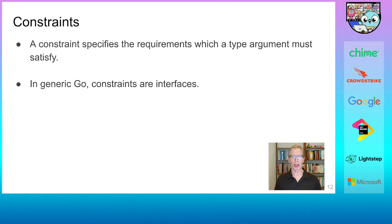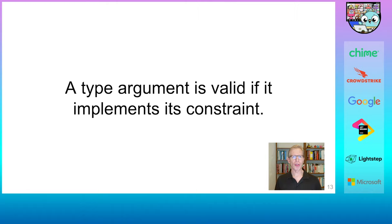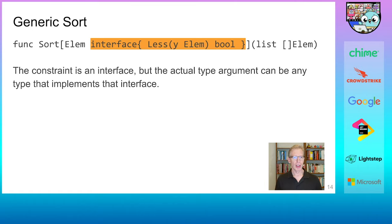So, this is where constraints are coming in. A constraint specifies the requirements that a type parameter must satisfy. Constraints in generic Go are simply interfaces. Because a type argument must satisfy its constraint to be valid, and because constraints are interfaces, we have a very simple rule. A type argument is valid if it implements its constraint. And again, we know what implementing an interface means, which makes this straightforward.